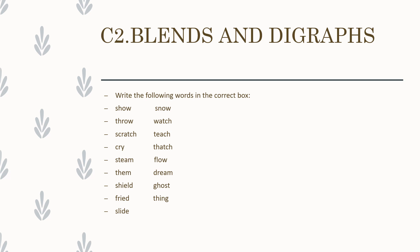Please turn to page 66. We have exercise C2 and you have to read the words given in the box and look for blends and digraphs. As I told you, there are words which may have more than one — they may have one blend and one digraph, or two of either kind. You have to decide whether that word has just one or both, and then write the words in the correct box.